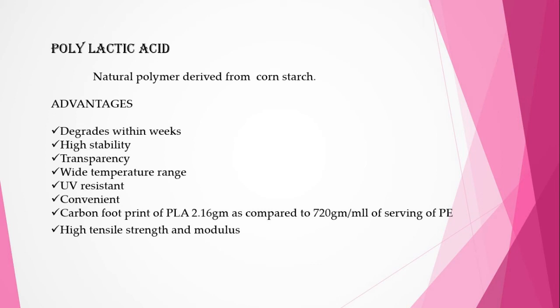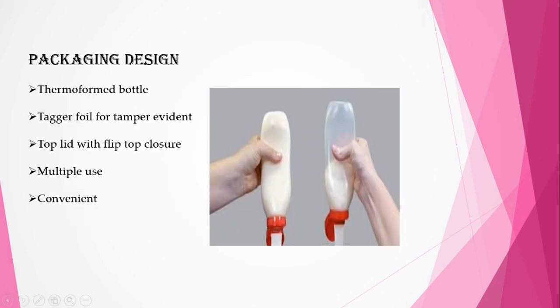Polylactic acid (PLA) is a natural polymer derived from corn starch. Its advantages include degradation within weeks, high stability, transparency, ability to withstand a wide temperature range, and resistance to UV light. It is convenient to use with a carbon footprint of 2.16 grams per ml of serving compared to 720 grams per ml for polyethylene. PLA also has high mechanical properties including high tensile strength. A packaging design using PLA includes a thermoformed bottle with tamper-evident foil, top lid with flip-top closure, and is multiple-use and convenient.